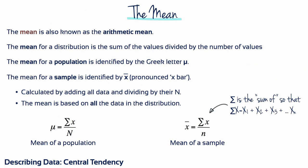The most commonly reported measure of central tendency is the mean, which is the arithmetic average of a group of scores. The mean is calculated by summing all the scores in a dataset and then dividing this sum by the total number of scores. The mean for a population is symbolized by the Greek letter mu and the mean for a sample by x bar.